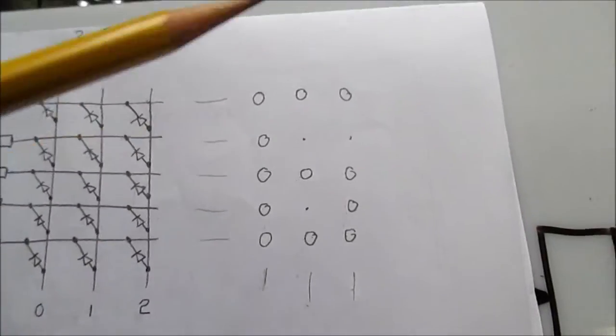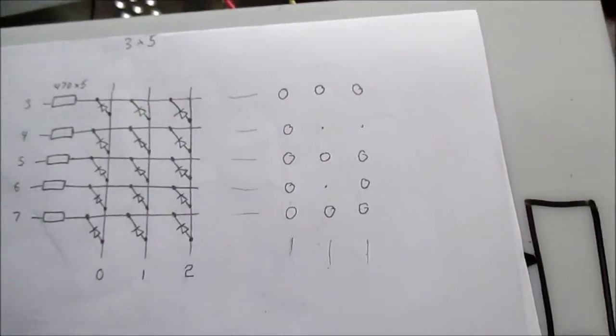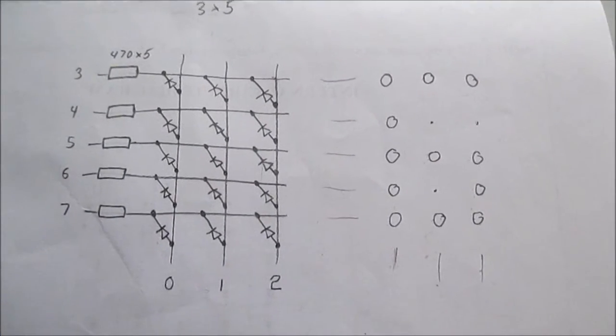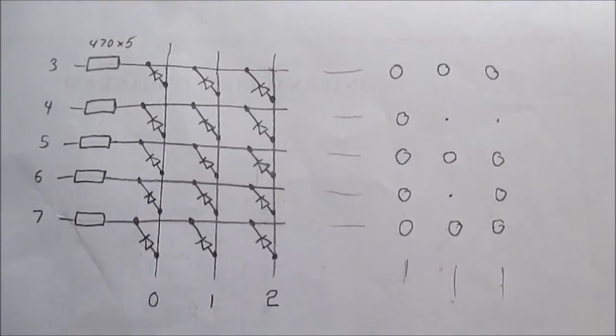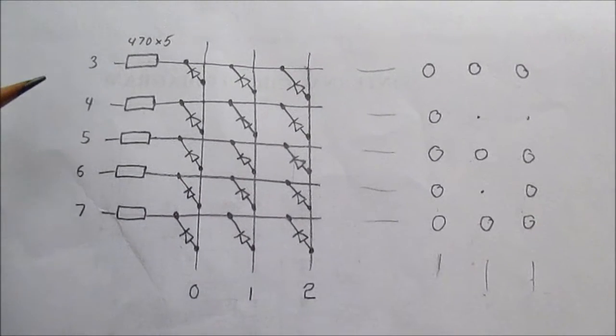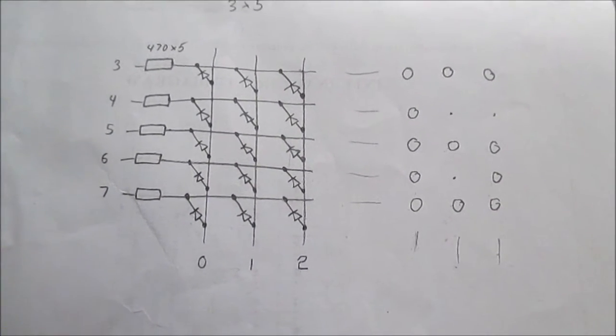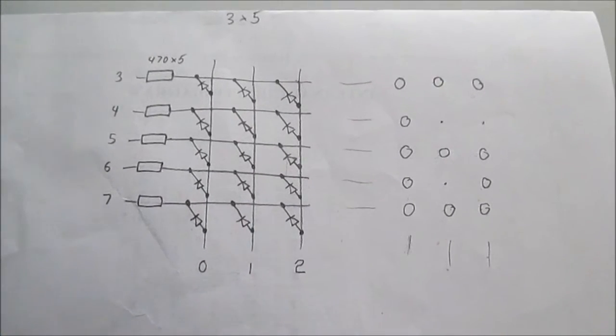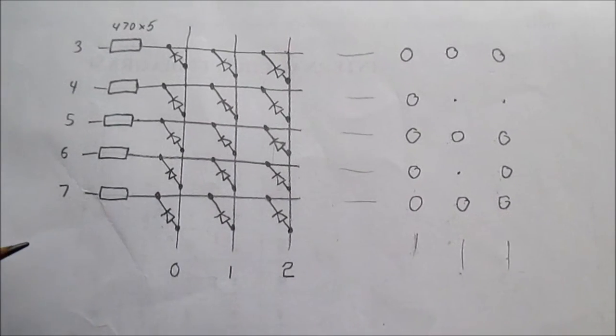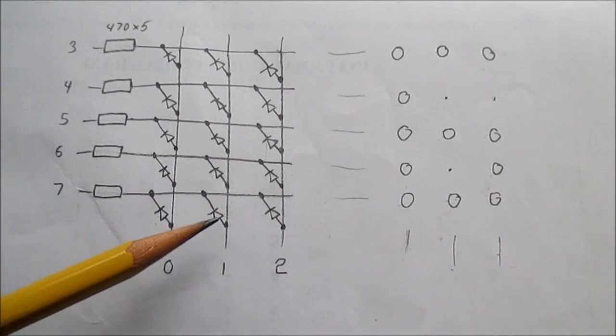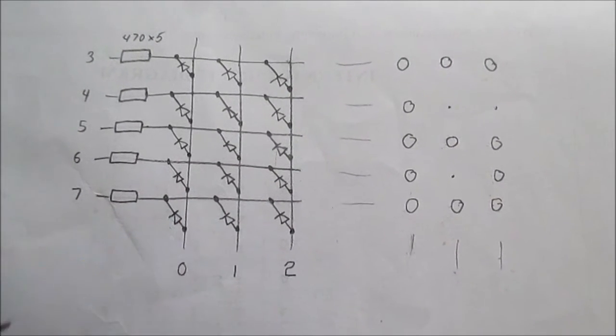So I could make an alphanumeric display. I won't get into much about that, you can watch that other video if you want to know more about that. But as you increase the number of rows and lines, you can control quite a large number of display elements, or most commonly LEDs.